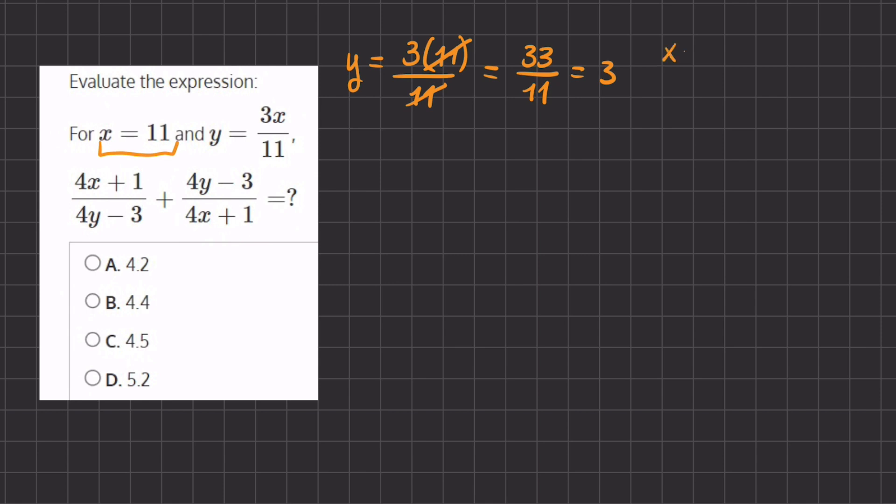Now if we have x to equal 11 and y to equal 3, let's plug that into our expression. So we have 4 times x, instead of x I'm going to be writing 11, plus 1, divided by 4 times y, which is 3, minus 3, plus 4 times y, which is 3, minus 3, divided by 4 times x, which is 11, plus 1.